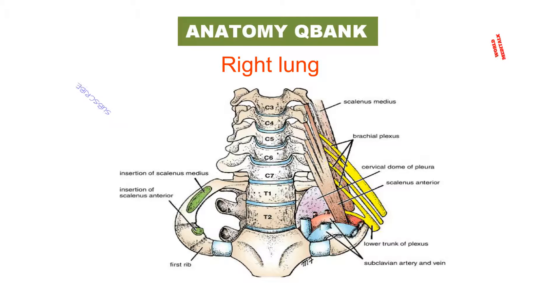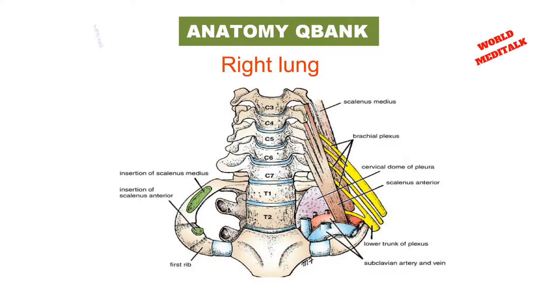The right main bronchus is shorter, wider, and more vertical than the left main bronchus, and therefore is the route taken by most foreign bodies.